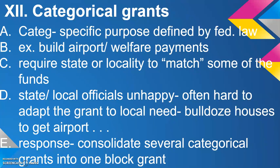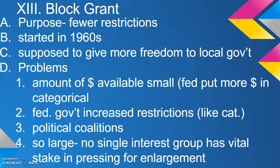In response, many categorical grants were consolidated into block grants, which have fewer restrictions and started in the 1960s to give more freedom to local governments. However, the amount of money available in block grants became smaller as the federal government put more and more into categorical grants — because the federal government prefers more strings, not fewer. Political coalitions grew around this division, but since no single group has a vital stake in pressing for enlargement of block grants, they don't function as effectively.